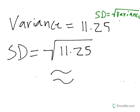Since the variance is 11.25, the standard deviation is equal to the square root of 11.25, which when we plug that in is about equal to 3.3541.